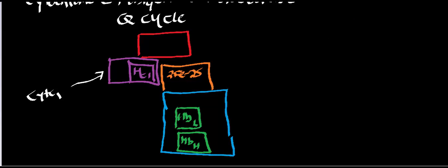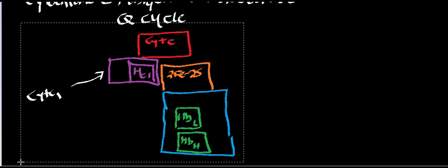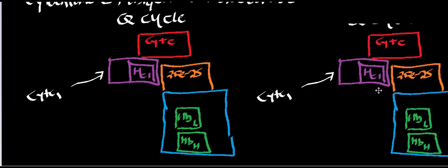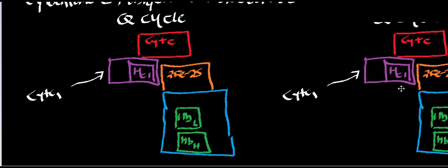And then we also have cytochrome C outside the complex. So I've drawn the setup, and I'm going to copy and paste this because we're going to need to do this twice — the Q cycle has two steps.